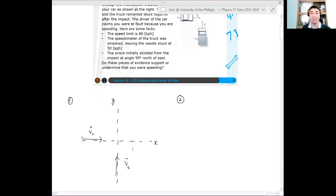It's moving with some velocity. Now, according to the problem, the speedometer dial stops at 50 kph. Therefore, that 50 kph is not the velocity of the wreckage, but rather it is the velocity of the truck initially. So this is 50 kph. Let's say this is j hat. Basically, that's the direction of the truck.